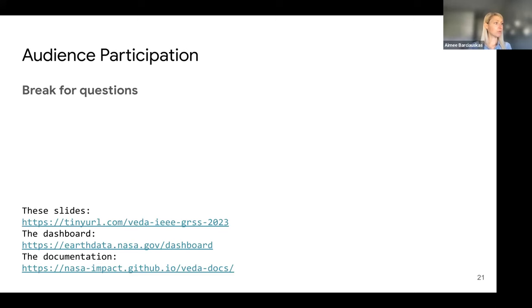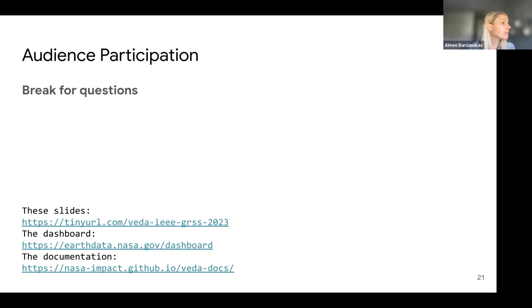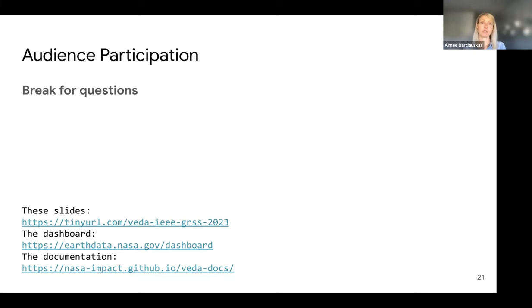Dr. Salguna asked how frequently the data is available - what is the spatial temporal difference between each dataset? The data is in a STAC catalog, and each collection will identify the spatial and temporal aspects of it. If you go to the API, you'd be able to see the temporal extent and spatial extent of each collection - that data is available through our API. Regarding visit frequency, the dataset I just showed is a daily dataset, but depending on the dataset, it's going to be different.